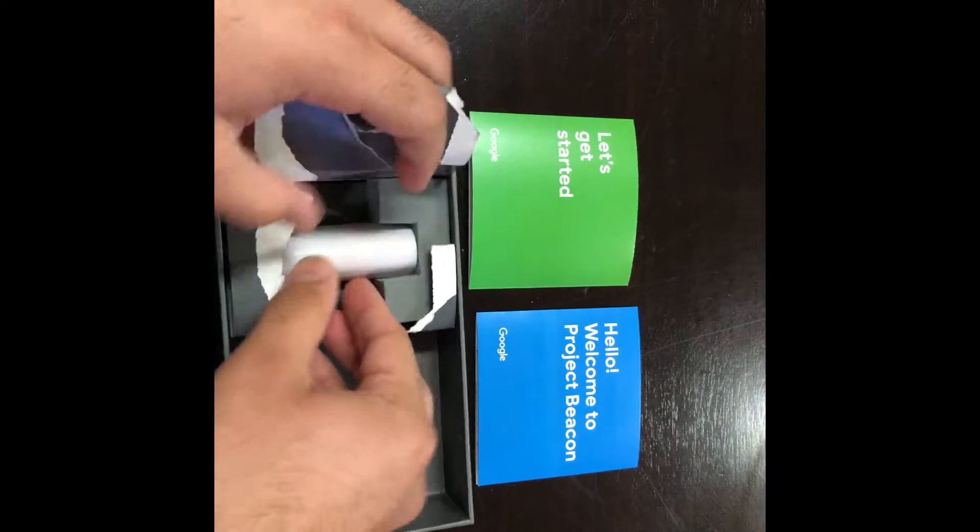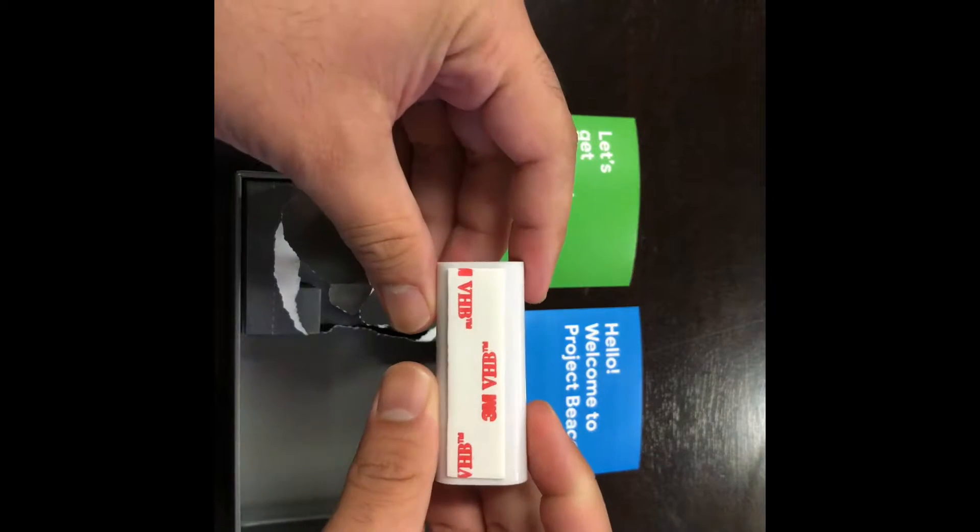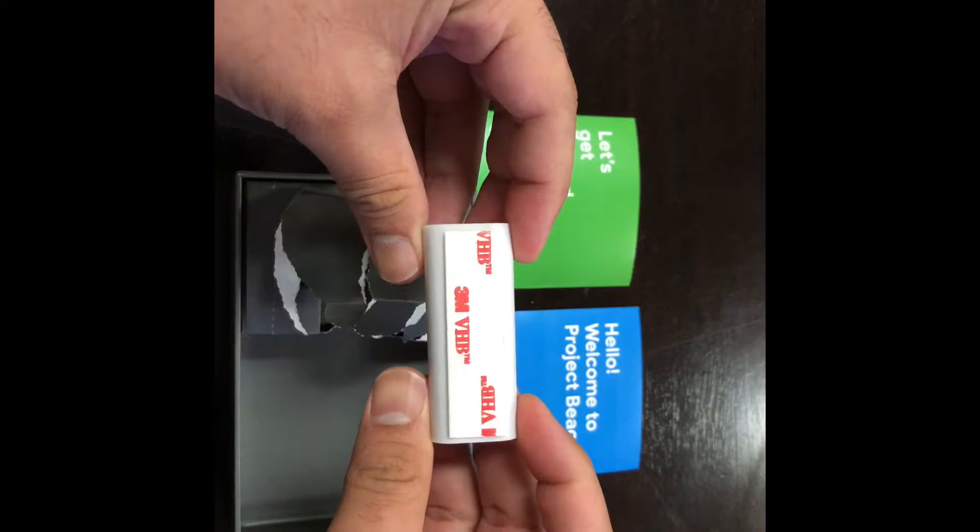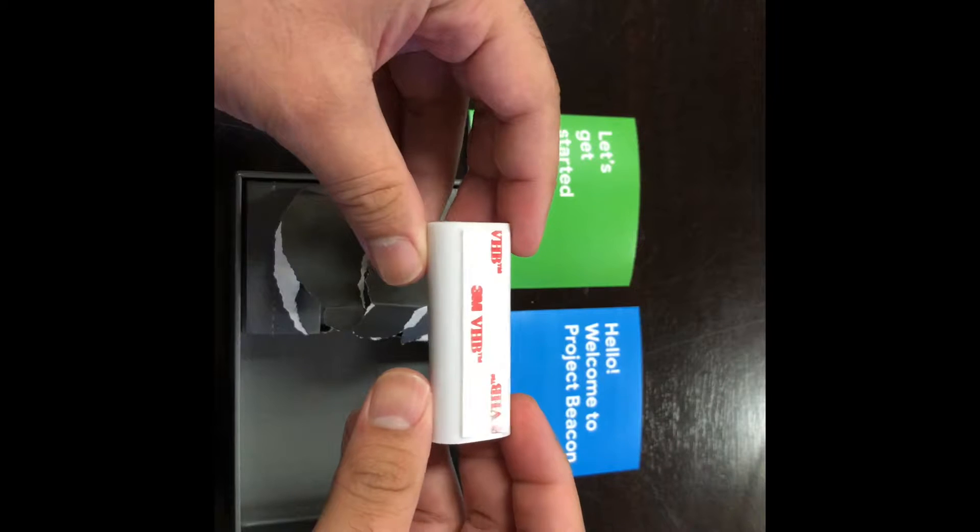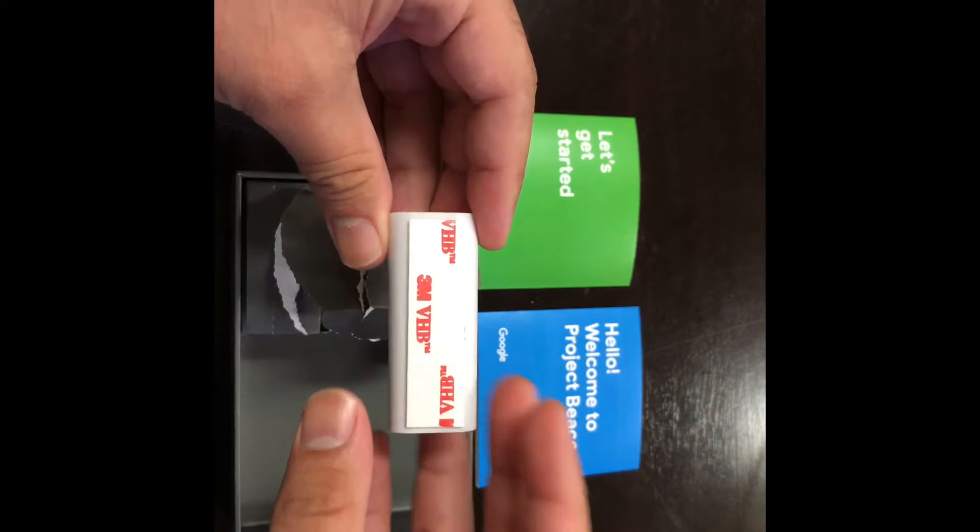Here you'll see the actual beacon and what it looks like. It has adhesive there on the bottom. You'll want to adhere this centrally to your office, up above on a ceiling preferably, or if you can't, you can place it on a shelf.